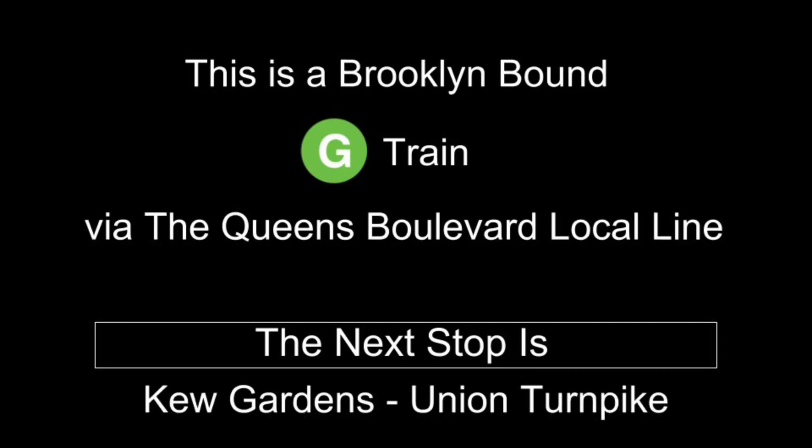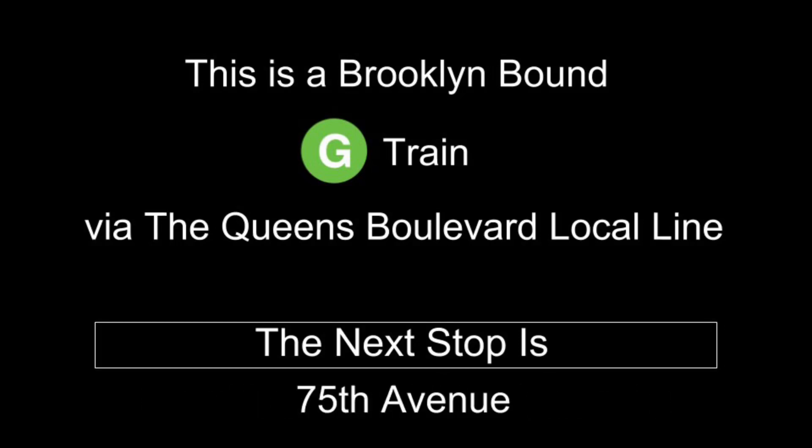This is a Brooklyn-bound G-Train via the Queens Boulevard local line. The next stop is Kew Gardens Union Turnpike. This is a Brooklyn-bound G-Train via the Queens Boulevard local line. The next stop is 75th Avenue.